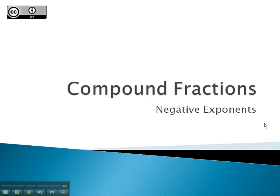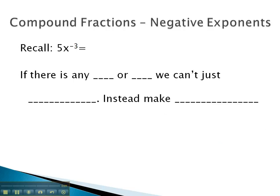In this video, we will simplify compound fractions that involve negative exponents. You may recall that a negative exponent will create a fraction. Be careful that the negative exponent only affects or moves what it's physically attached to. This means 5x to the negative 3 would be 5 over x cubed.